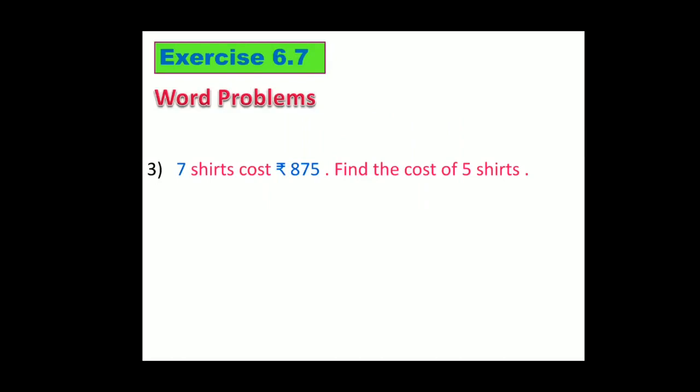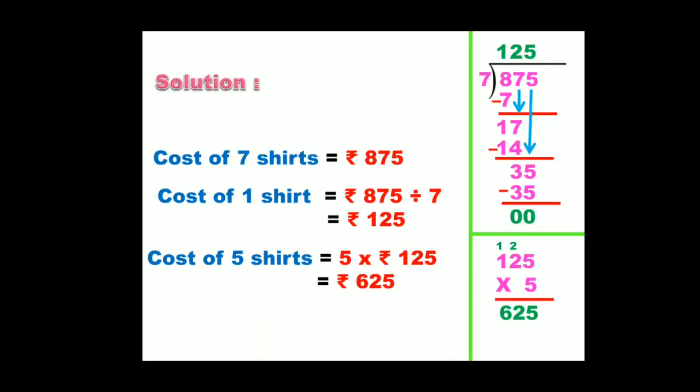7 shirts cost ₹875. Find the cost of 5 shirts. To find the cost of 5 shirts we have to find the cost of 1 shirt. So, according to question we will write the given information.